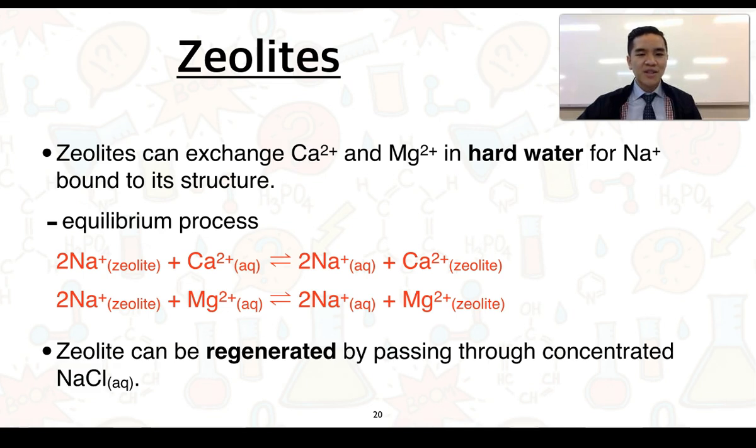Over time, you can expect that your zeolite will become used up, so there won't be any more sodium ions to exchange for calcium and magnesium. But what you can do is regenerate your zeolite by essentially passing through a concentrated solution of sodium chloride, and that would act to essentially reverse the equilibrium process and shift the equilibrium to the left. So that concludes the first part of 4.2 water. I'll see you guys in the next video.